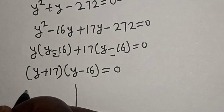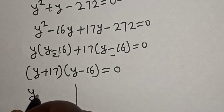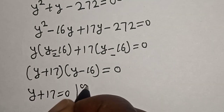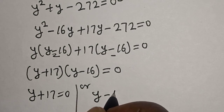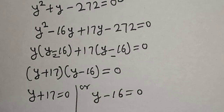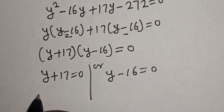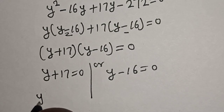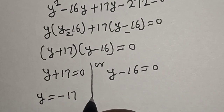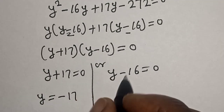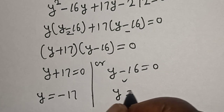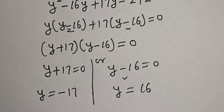We now have two cases: y plus 17 is equal to 0, or y minus 16 is equal to 0. From the first case, y is equal to minus 17, and from the second case, y is equal to 16.